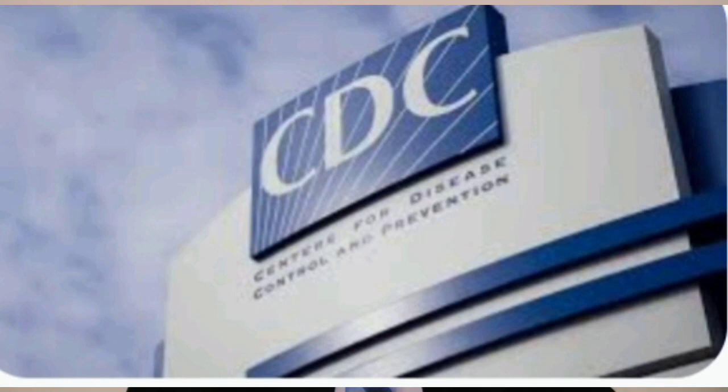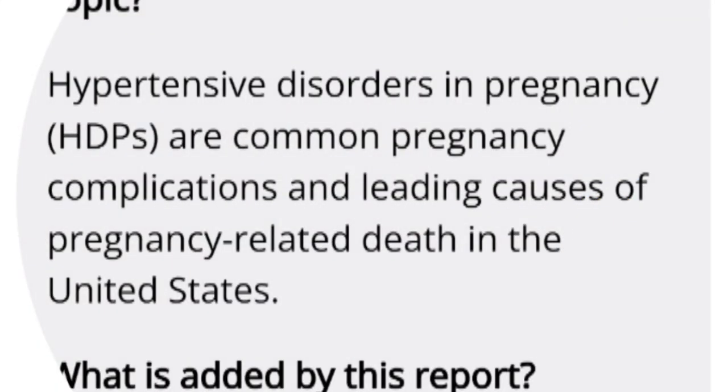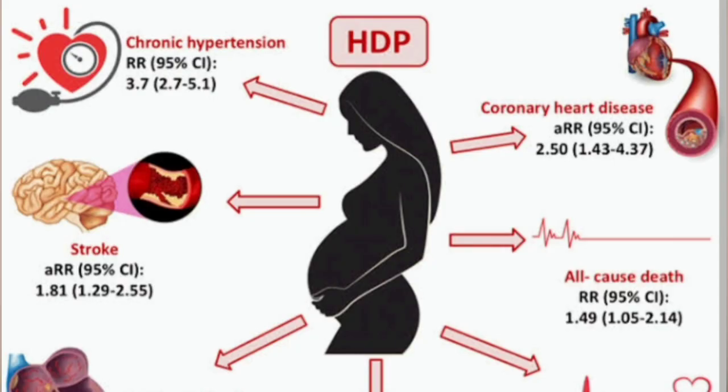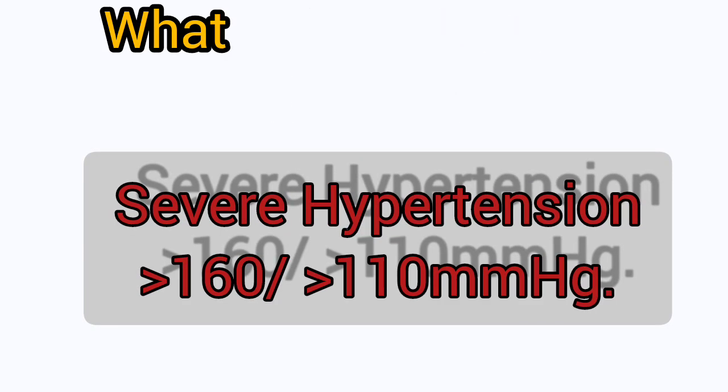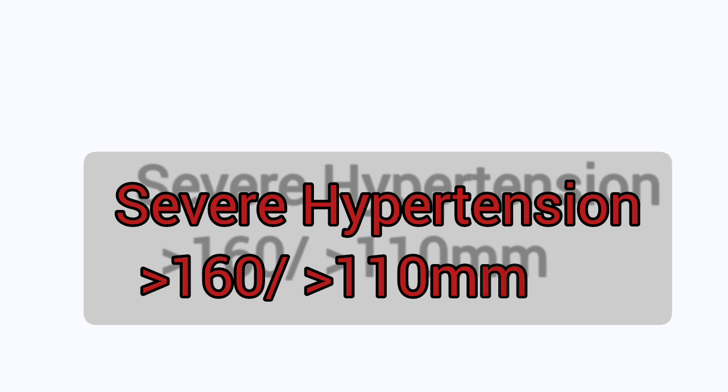According to the Center for Disease Control and Prevention in its 2019 report, hypertensive disorders in pregnancy are the leading cause of pregnancy-related death in the United States. The common characteristic for hypertensive disorders in pregnancy is hypertension or high blood pressure, defined as any blood pressure greater than 140 systolic and above 90 diastolic on two occasions at least 4 to 6 hours apart. Severe hypertension is when the systolic blood pressure is greater than 160 and/or the diastolic blood pressure is above 110.